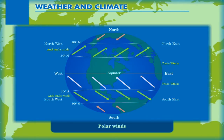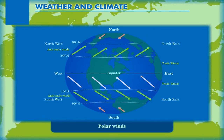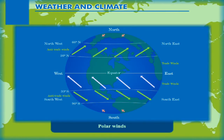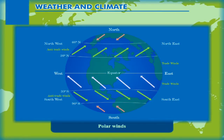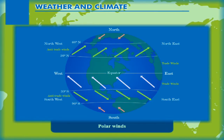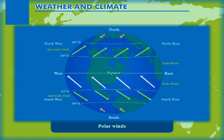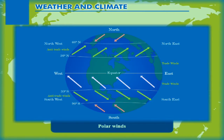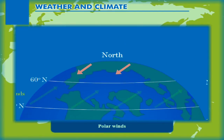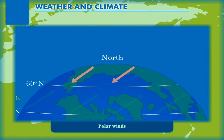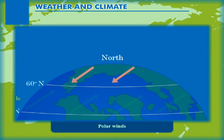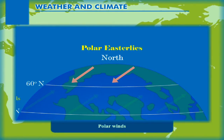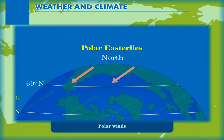Polar winds blow from the poles towards the subpolar low pressure belt. Their direction is the same as that of trade winds, that is why they are also known as polar easterlies.